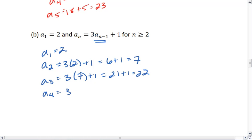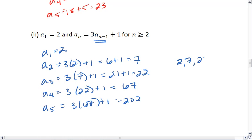My fourth term, take 22, multiply it by 3 and then add 1, so I get 67. And then for my fifth term, I take 67, multiply it by 3 and then add 1, and this gives me 202. Thus my terms are 2, 7, 22, 67.